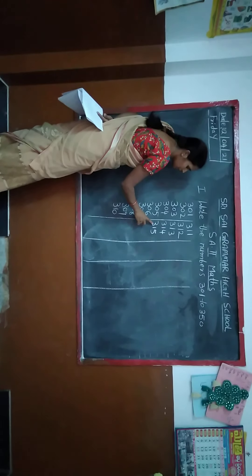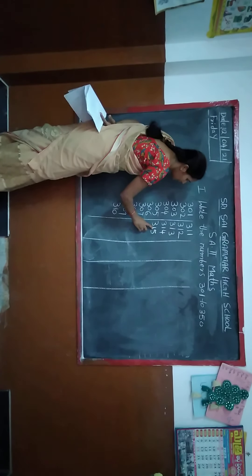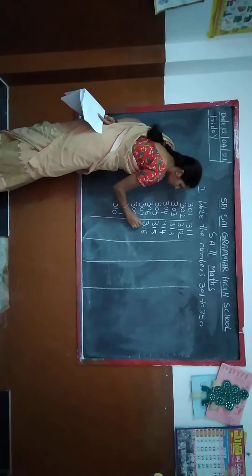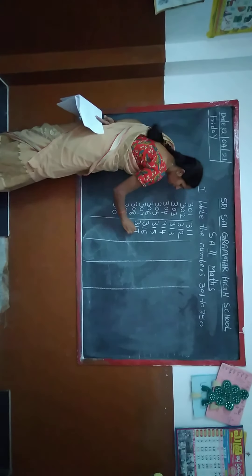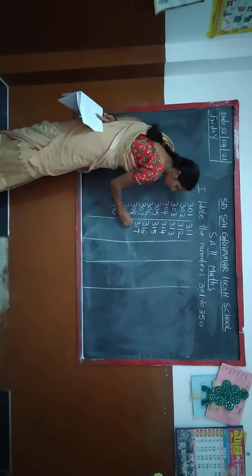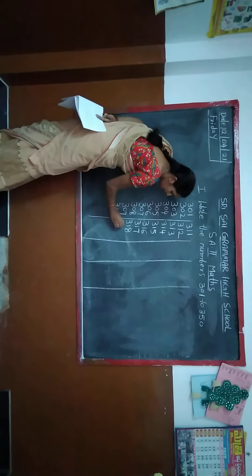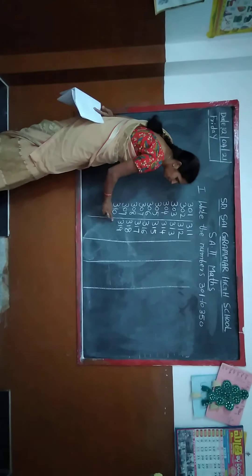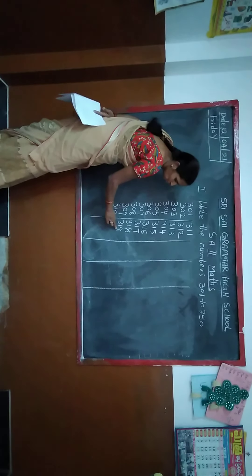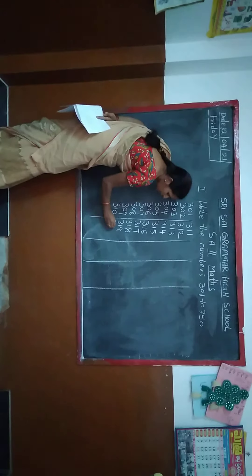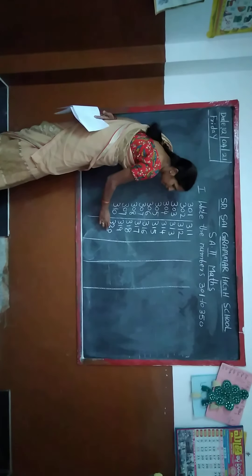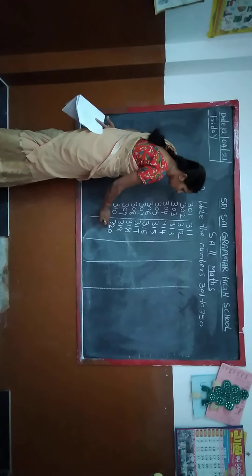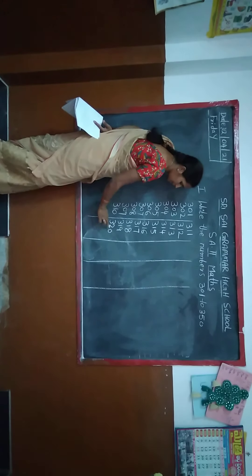Look here. Read this number — 315. 350. 316. Spell and write. 317. 318. 319. After? Change the tens. 320.